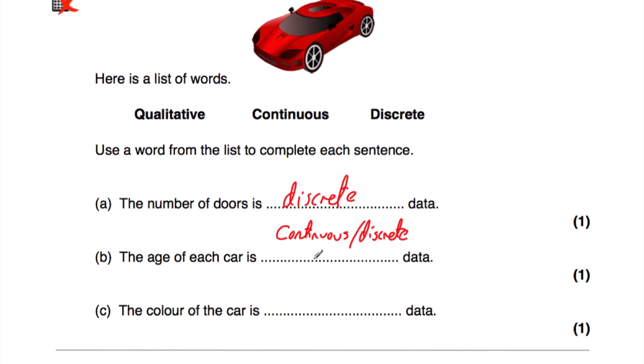Part C: the colour of the car is what type of data? The colour of the car is qualitative data, because colour is one of the qualities of the car — qualitative data.